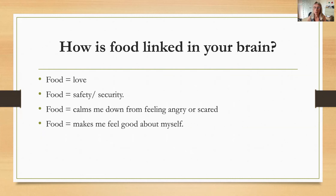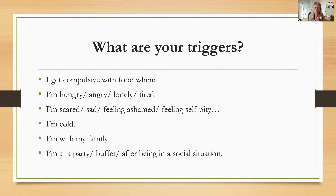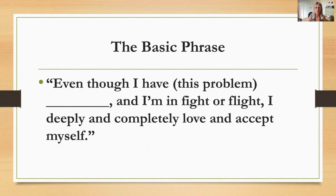Think about how food is linked in your brain. Food equals love, food equals safety, food calms me down when I'm feeling angry or scared, food makes me feel good about myself instead of ashamed or embarrassed. You might need to pause the video if you don't know what food equals for you — what good thing happened when you overate or underate. Just think about what your triggers are and that might give you a clue.